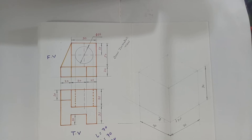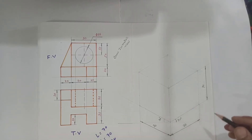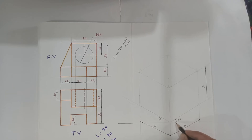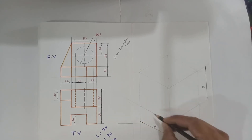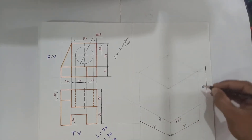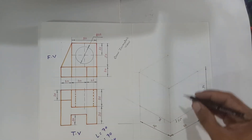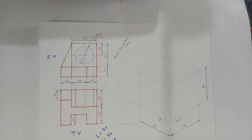First of all we have to draw the isometric view of the cube whose edge length equals 70 mm. Draw the baseline, then draw two lines inclined at 30 degrees, each of 70 mm length for width and height — 70 mm. Then complete the cube by the method discussed in session one.